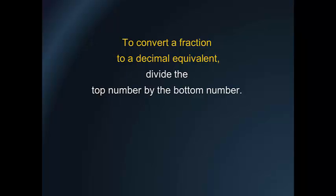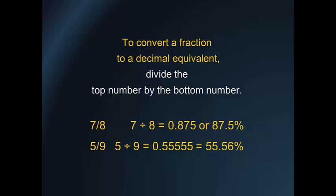To convert a fraction to a decimal equivalent, divide the top number by the bottom number. Example: 7 divided by 8 equals 0.875, or 87.5 percent. Or 5 divided by 9 equals 0.55555, equals 55.56 percent.